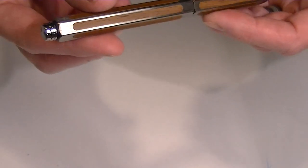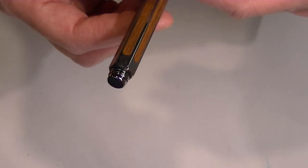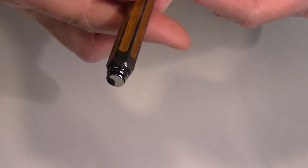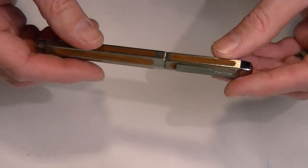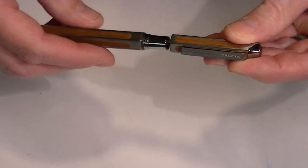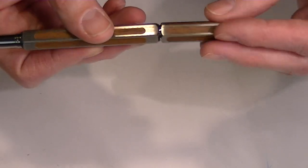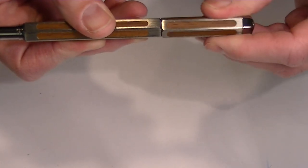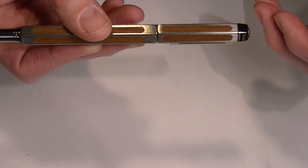On the bottom of the pen, it has threads because the cap unscrews from the pen and is posted on the opposite end by screwing it onto those threads.